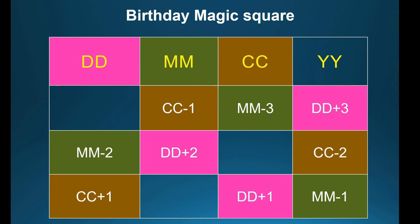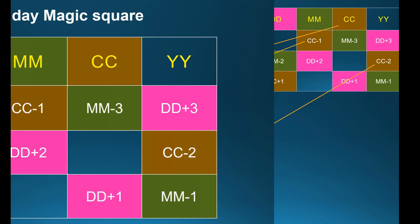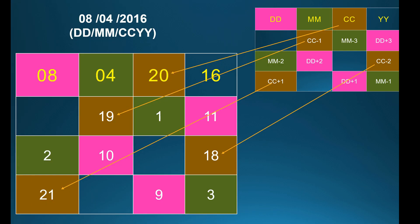Next comes CC. Leave the CC column. The remaining columns are: CC plus 1, CC minus 2, CC minus 1. Substitute the values — CC is 20 — so you get 21, 18, 19.